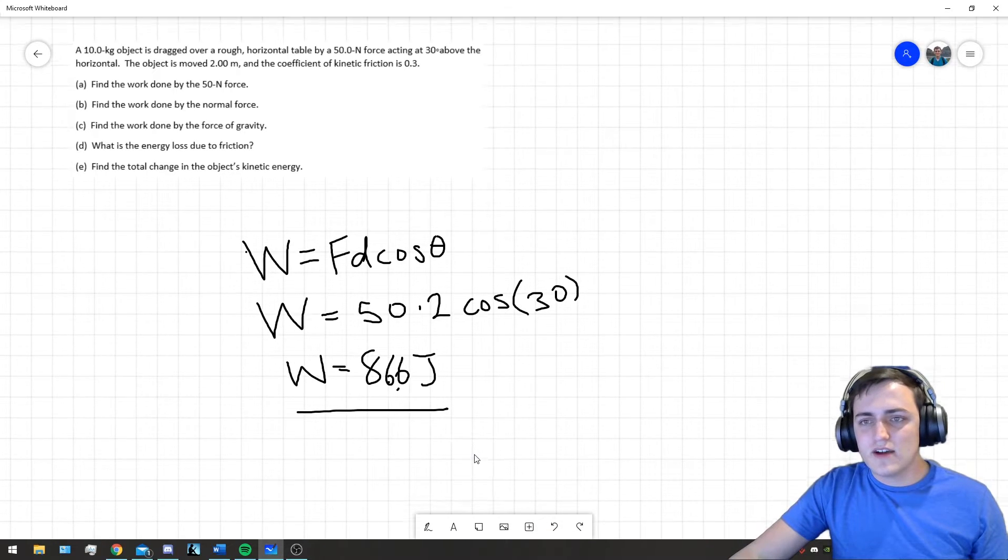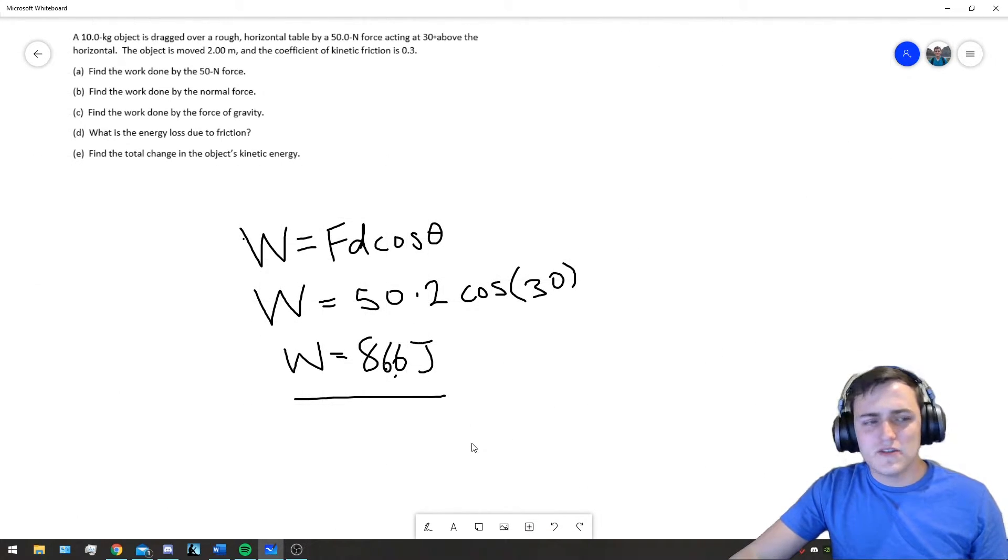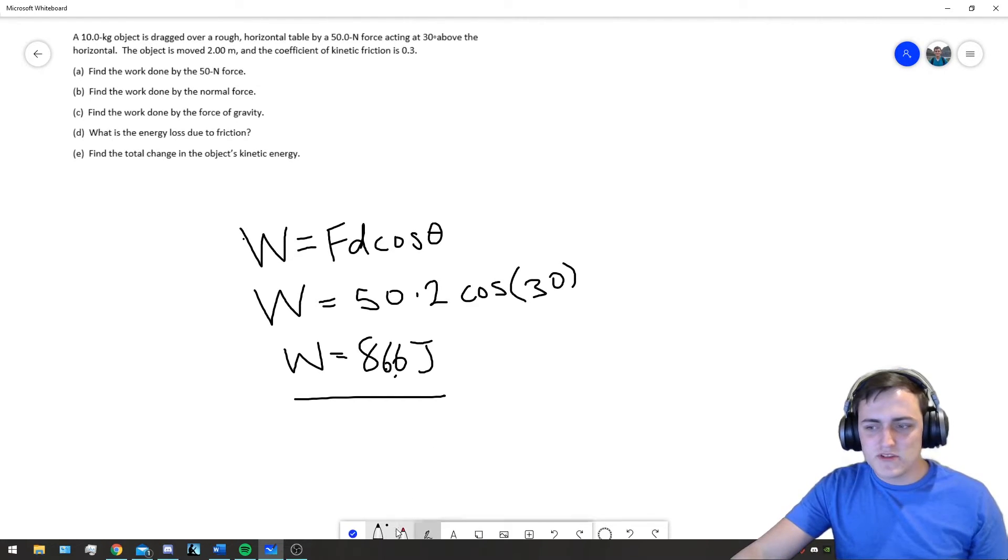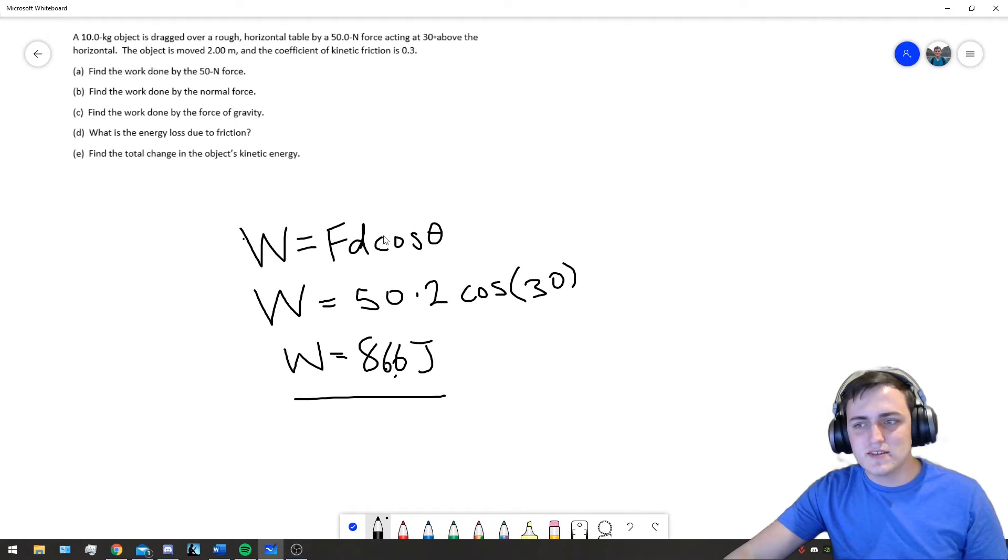Part B says, find the work done by the normal force. Well, let's look at that same equation. Force times distance times cosine theta. Well, we can say that work, due to the normal force, work N or something, is, well, what's the normal force?